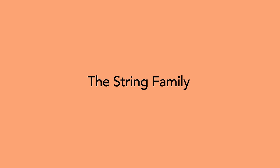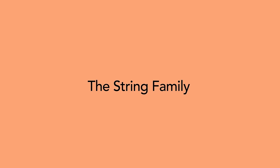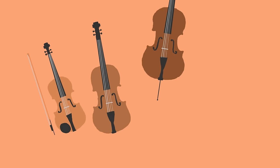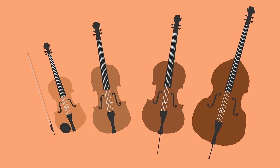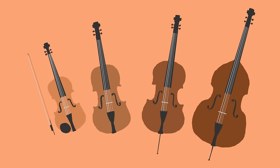One category of timbre we use quite often is strings. Inside of the string family, we have violins, violas, cellos, and double basses. They have similar timbres and tones in some ways, but each one is distinct.